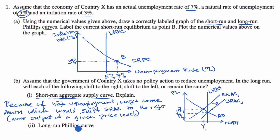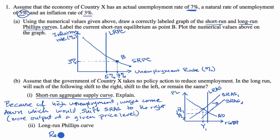Part two: the long-run Phillips curve. That's this vertical line right here. The long-run Phillips curve and the long-run aggregate supply curve don't change unless something structurally changes in the economy — maybe a change in education levels, population, or technology. So here, the long-run Phillips curve remains the same.